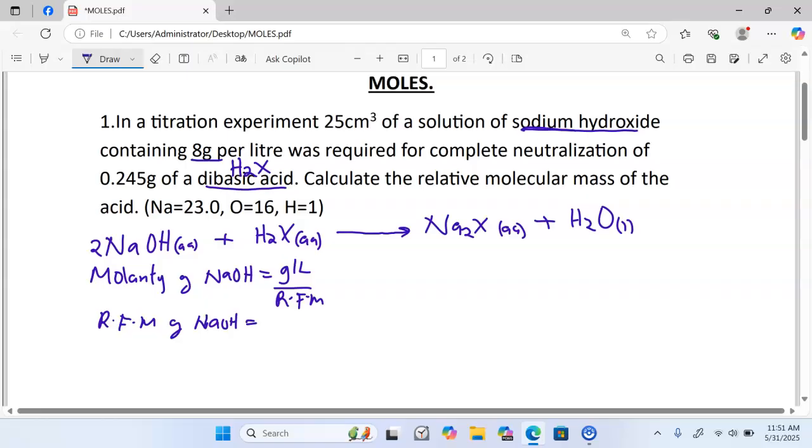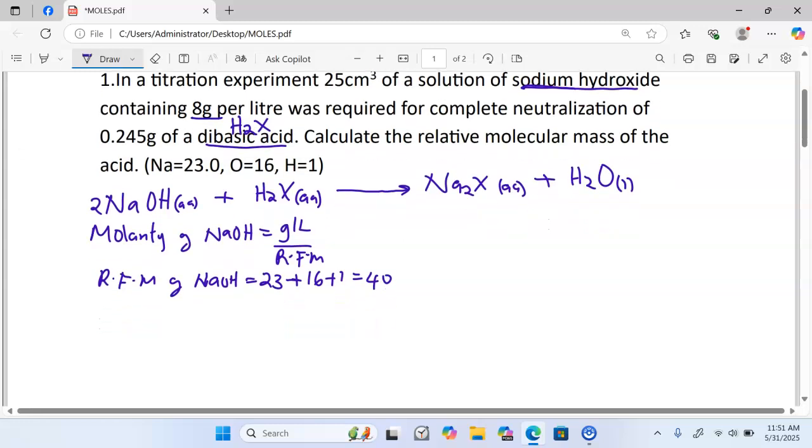we can get the relative formula mass of sodium hydroxide by adding the relative atomic masses of all the elements forming sodium hydroxide. Sodium is 23, plus oxygen is 16, plus hydrogen is 1, giving us 40. In this case now, we can proceed and get molarity. Molarity is given by taking the number of grams per liter. We have 8 divided by 40, and this one gives us 0.2 molar.